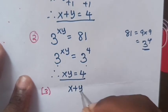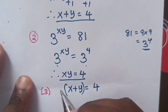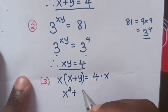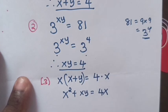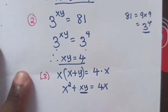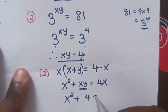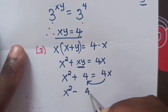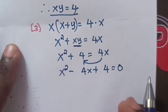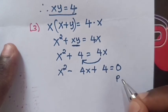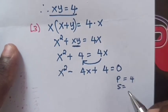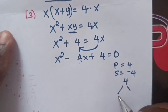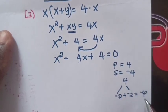Step 3: From x plus y equals 4, we multiply both sides by x, giving us x squared plus xy equals 4x. Since xy equals 4, we substitute to get x squared plus 4 equals 4x. Moving 4x to the left side gives us x squared minus 4x plus 4 equals 0. In this quadratic equation, the product is 1 times 4 equals 4, and the sum is negative 4.